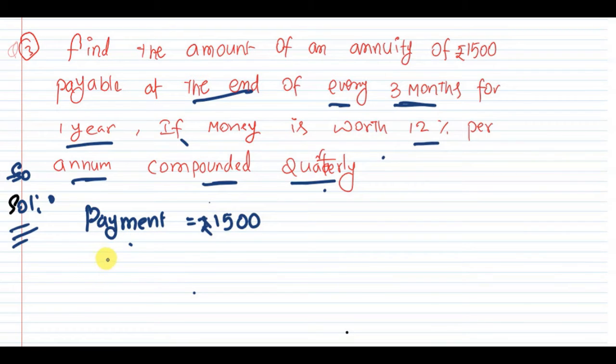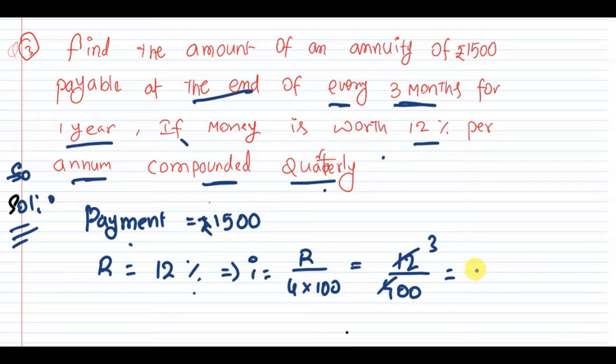Next, rate of interest. R was given 12%, and now calculate i. So we know it was a quarter payment, so i equals R by 400. The value of R is 12% divided by 400. So 4 got cancelled 3 times, 3 by 100 means 0.03.